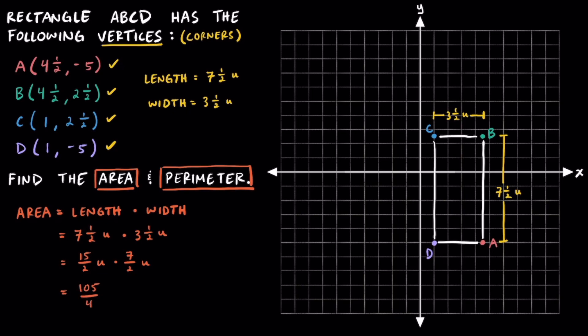Multiplying across, we get 105 over four units squared, or square units, and converting this into a mixed number by using long division or a calculator, we'll get 26 and one-fourth square units. Therefore, we figured out the area of this rectangle is 26 and a quarter square units.